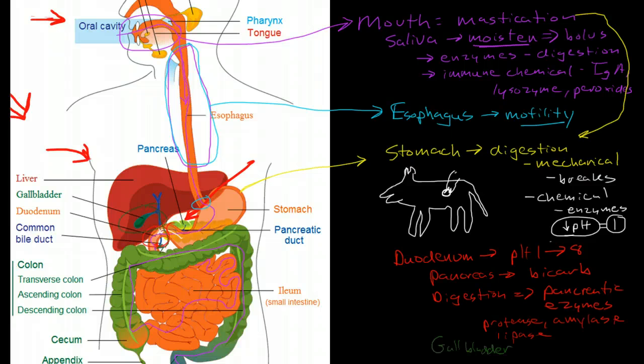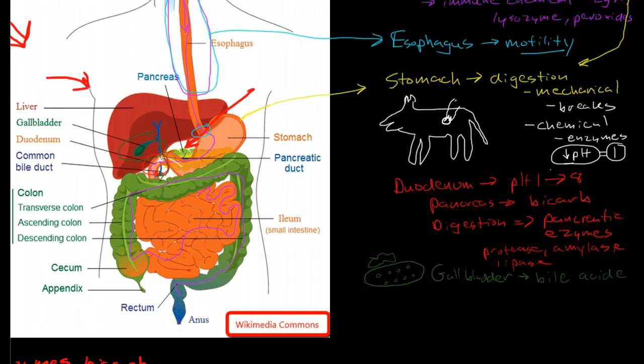More importantly though also here in the duodenum through the common bile duct we have the gallbladder that is releasing bile acids and these bile acids break large globules of fat down into tiny globules of fat that are suspended within the liquid medium of contents of the duodenum.